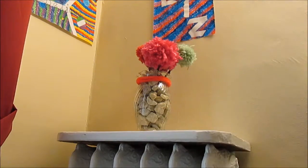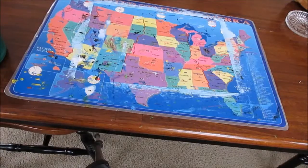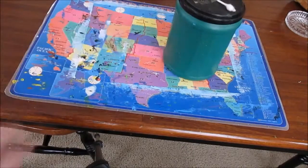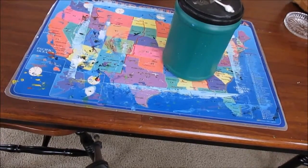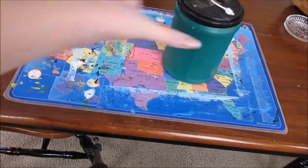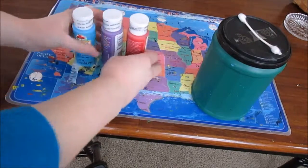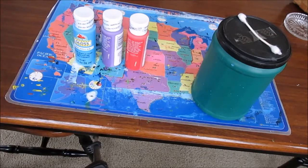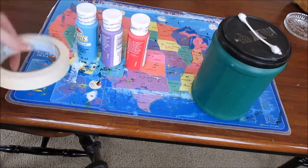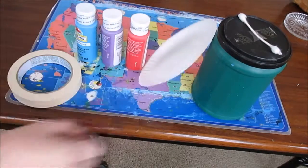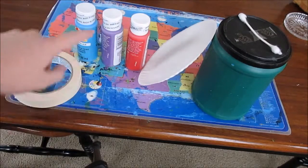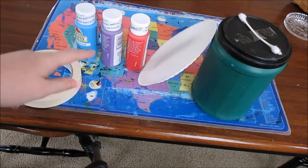Okay, so the things you need are q-tips, let me see if I can get that in view, and then you will need colored paint however many you want, masking tape, and then you'll need a paper plate to hold the paint. Oh I forgot, you need paper too.